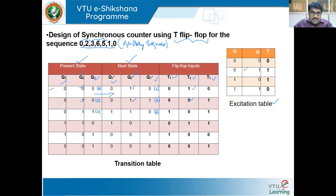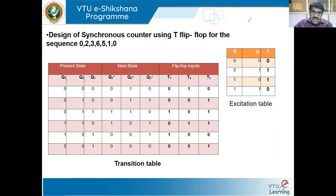This is an arbitrary counting sequence, which we can call a mod 6 but with a different sequence: 0, 2, 3, 6, 5, 1, 0. Once I have the flip-flop inputs and the present state, I find the expression for T1, T2, and T3 using K-maps. How many variable K-map? That depends on the present state — three present states Q1, Q2, Q3 — so three-variable K-maps.